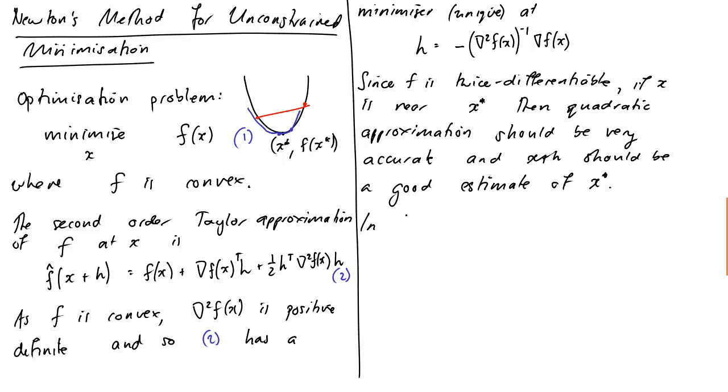So in Newton's method, we move to a point x plus t h. Okay, we don't necessarily move to the point x plus h because if we're further away, then that might get us too far away. Okay, so we go through a procedure that I'll explain in a second called backtracking line search to choose a value of t between 0 and 1 to move to.